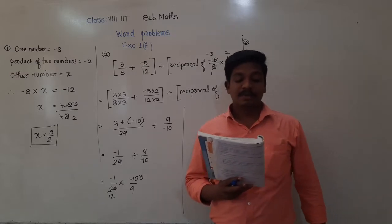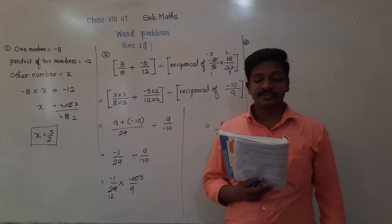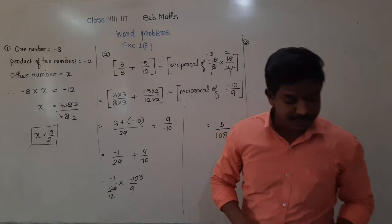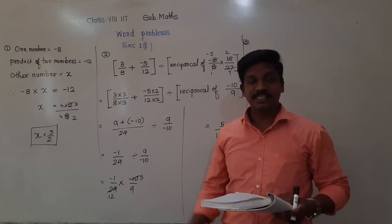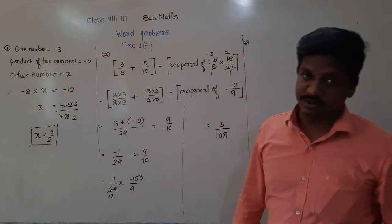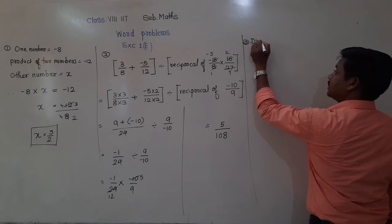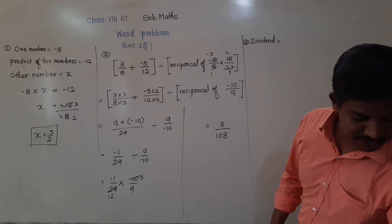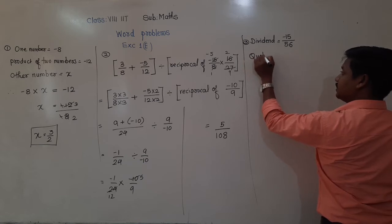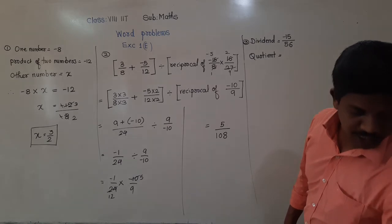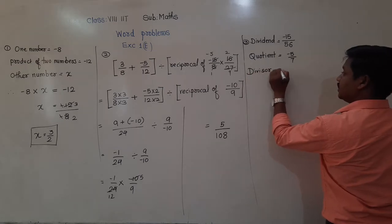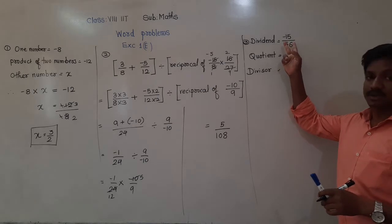Third problem: by what rational number should minus 15 upon 56 be divided to get minus 5 upon 7? So here, the dividend is minus 15 upon 56, and the quotient is given as minus 5 upon 7. We have to find the divisor — the number by which we divide.